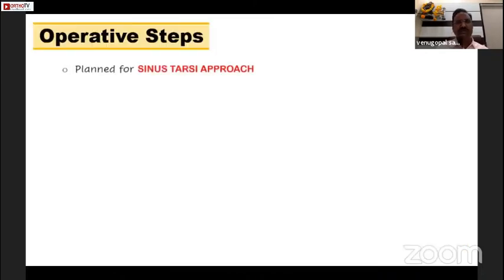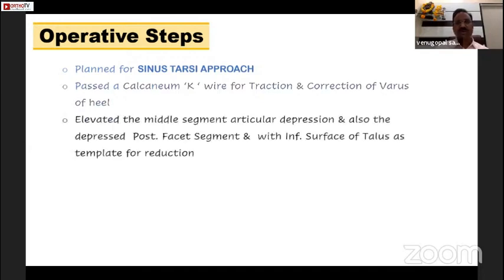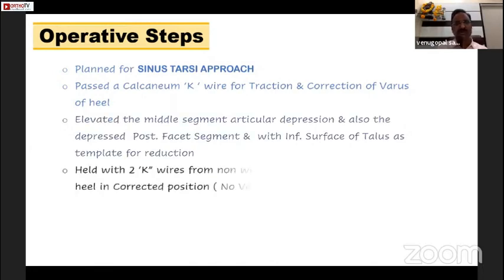We have done this procedure with the sinus tarsae approach. We have passed a calcaneum K-wire for giving traction and also to correct the varus of the heel during the operation. We have elevated the middle segment articular depression and also the depressed posterior facet. We used the inferior surface of the talus as the template for reduction.